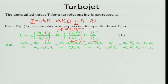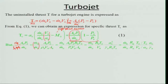Writing A_9 P_9 / ṁ_0: I can write ṁ_9 as ρ_9 V_9 A_9, so A_9 P_9 / ṁ_0 involves ṁ_9/ṁ_0 and A_9 P_9 / (ρ_9 V_9 A_9). Using the ideal gas law, ρ_9 = P_9 / (R_9 T_9), so P_9 and A_9 cancel, leaving ṁ_9/ṁ_0 times R_9 T_9 / V_9.